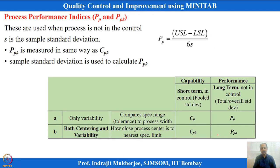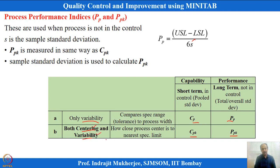What Minitab does is consider both centering and variability when reporting CPK and PPK. PP and PPK differ only in the estimation of sigma — S versus R-bar/D2. Accuracy and precision are both accounted for in CP and CPK indices. We prefer to use CP and CPK, but sometimes PP and PPK are also reported.